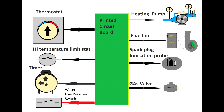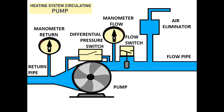The boiler startup protocol goes like this: first it will check if the water in the system is okay, then if the high temperature limit switch is okay, then the thermostat and timer will call the system to run. The pump will start first, and if the pump is healthy and running, then the flue fan will start to purge the system. Then ignition begins — the spark plug is initiated, then the gas valve opens, and then the ionization probe reads the information. In a domestic application you will only have a flow switch telling you that water is circulating.